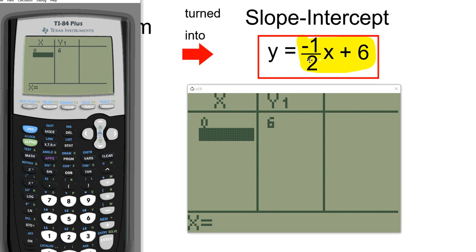Why? Because 0 times negative 1 half is 0, and 0 plus 6 is 6, and so it's instantly telling you that your Y value is 6. And now you can type in any other values that you want. 1 for X, that gets you 11 halves, or 11 over 2.